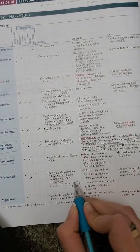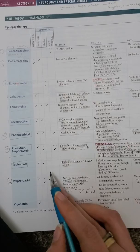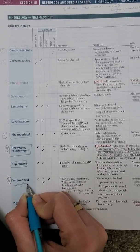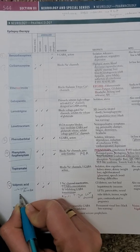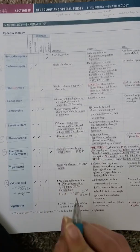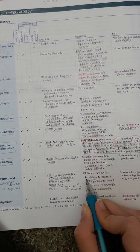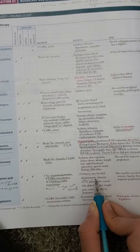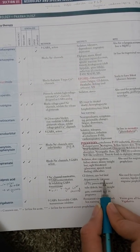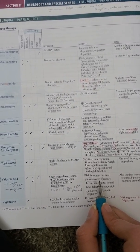Valproic acid is used for bipolar disorder and migraine prophylaxis. It is a very good drug for bipolar disorder and is also used for migraines. Its most important side effect is hepatotoxicity — it causes liver toxicity, deranging LFTs. It is important to monitor the patient's LFTs, and children aged two or younger are at greater risk because they form a toxic metabolite.